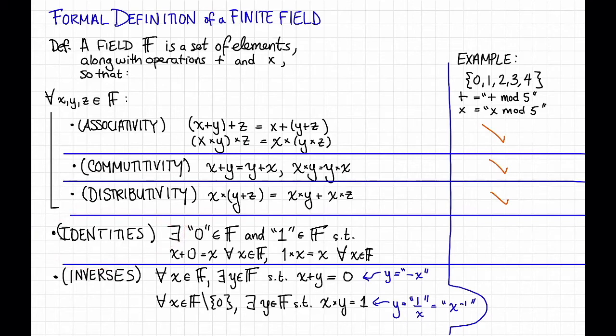The next thing is we need identities. In this case, we have them. The additive identity is just 0, and the multiplicative identity is just 1. And since x times 1 is equal to x for any x, that's still true mod 5, and x plus 0 is equal to x for any x that's still true mod 5. So that holds.